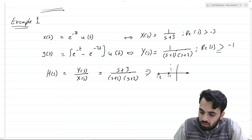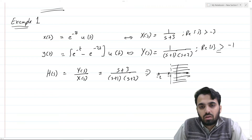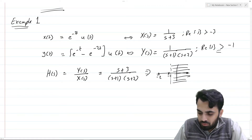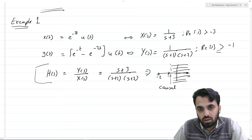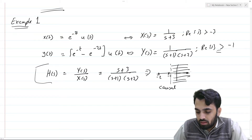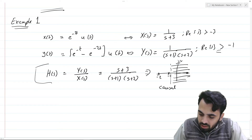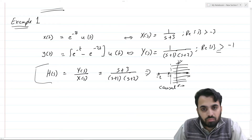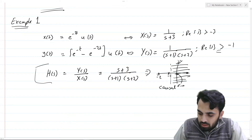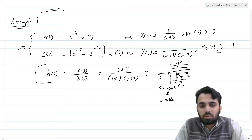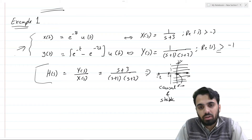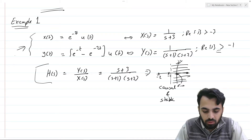The ROC is towards the right of the rightmost pole. This indicates that the system is causal because the function is rational and the ROC is to the right of the rightmost pole. Moreover, it covers the jω-axis when σ = 0, so this system is both causal and stable. Just by examining the input and output expressions, we have determined the causality and stability of this system.